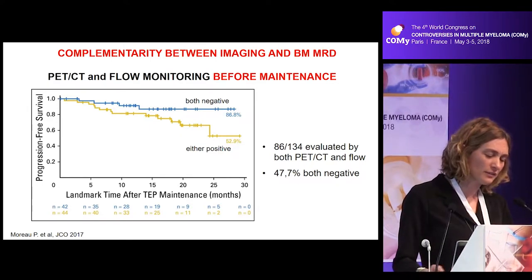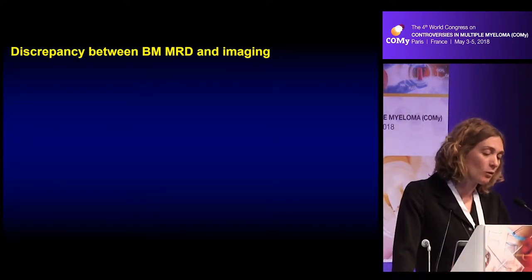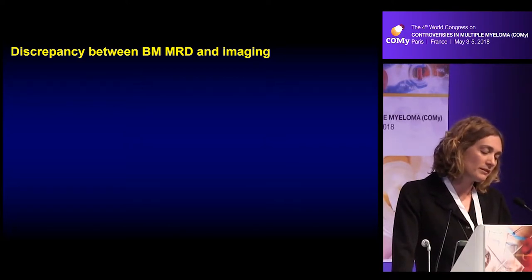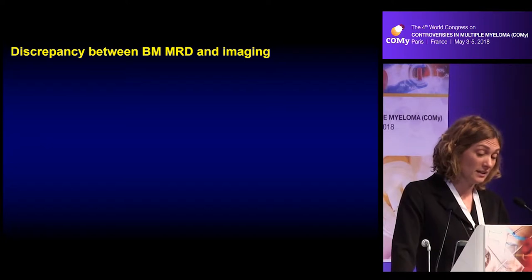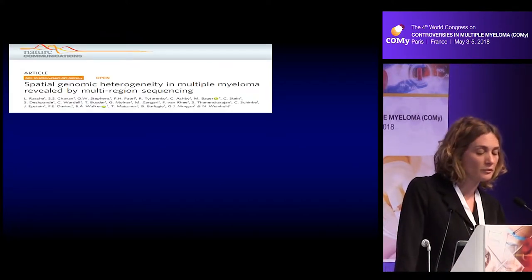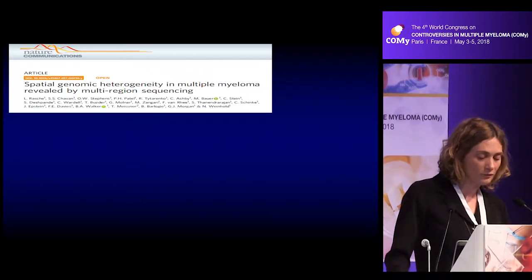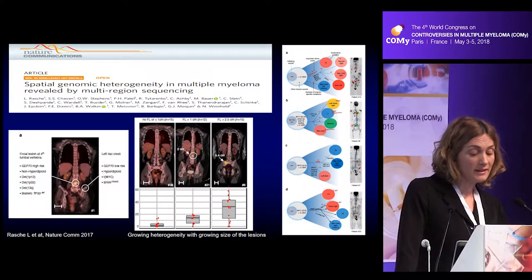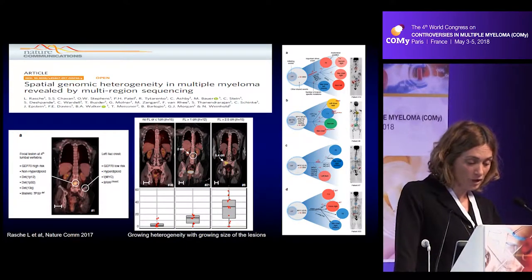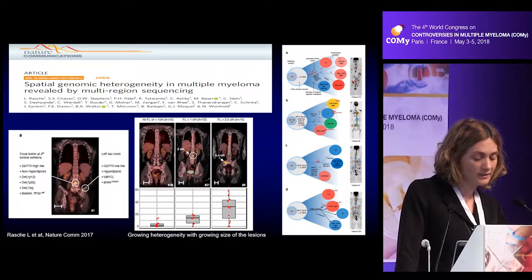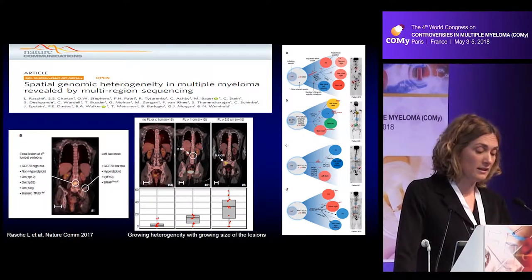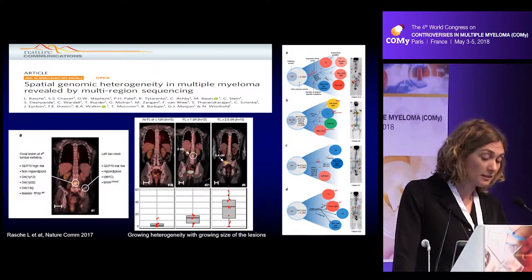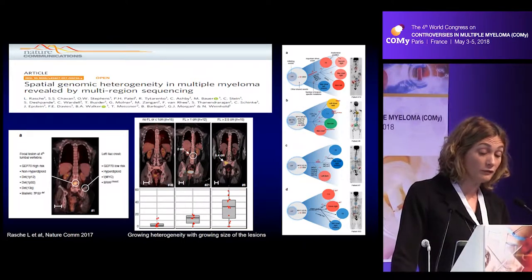The biological reason for discrepancy between bone marrow MRD negativization and imaging negativization is the spatial genomic heterogeneity of multiple myeloma. This was clearly demonstrated by the Little Rock group, who showed that the genomic profile of the disease can differ between the bone marrow and focal lesions — for example, JAP low-risk in the bone marrow but JAP 70 high-risk in the focal lesion. As a result, the disease may respond to treatment in the bone marrow but resist in the focal lesion.